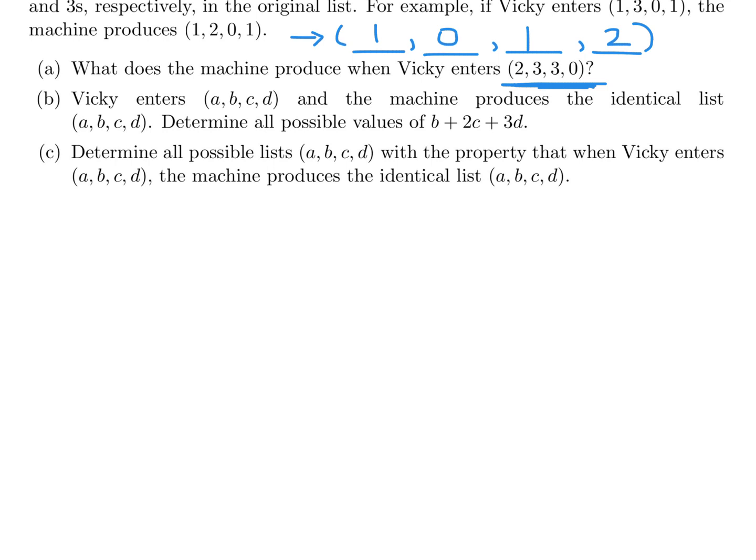So, Vicky enters A, B, C, D, and the machine produces the identical list A, B, C, D. Determine all possible values of B plus 2C plus 3D. So, let's discuss this. Here you have A, B, C, D going into this machine, and it spits out the exact same A, B, C, D. Interesting, right? Is that even possible? Well, it is. Let's talk about this. I have no idea what this original A, B, C, D is, right? But one thing is for sure is that over here, the A represents the number of 0s in this list, this original list. The B represents the number of 1s. The C represents the number of 2s. And the D represents the number of 3s in this original list. Okay? That's by definition.